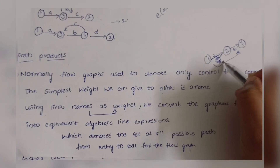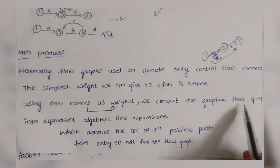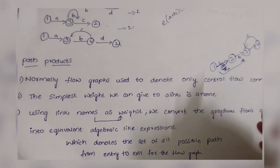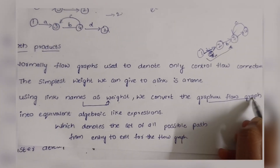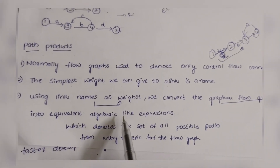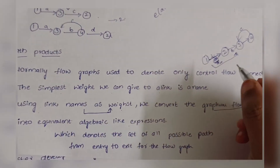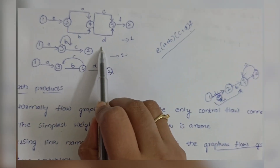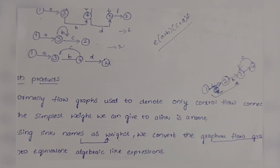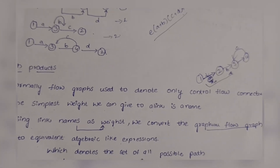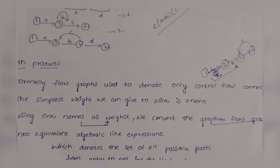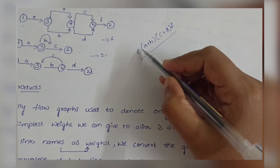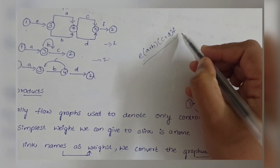A is the name. We convert the graphical flow graph into equivalent algebraic expressions. From the flow graph, we derive algebraic expressions which denote the set of all possible paths from entry to exit of the flow graph.